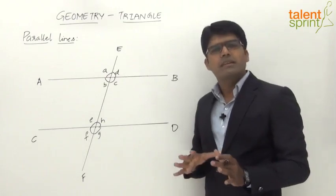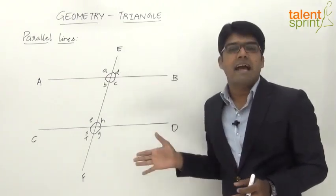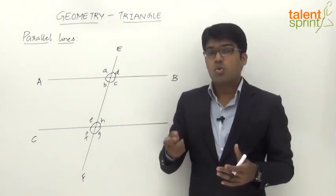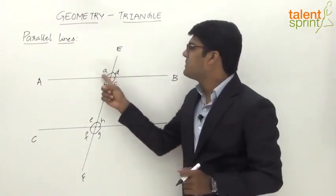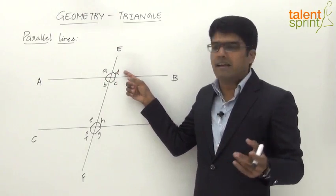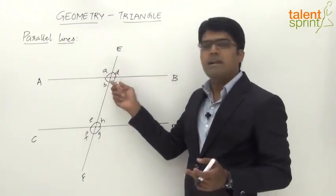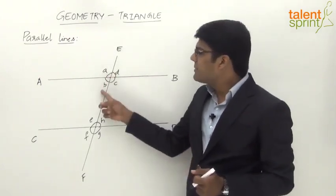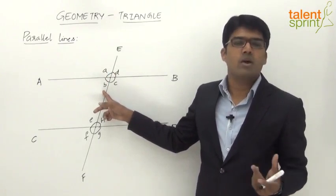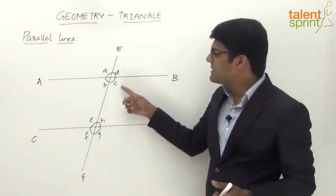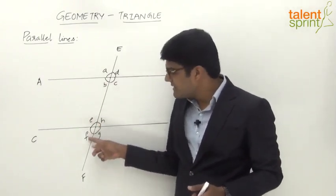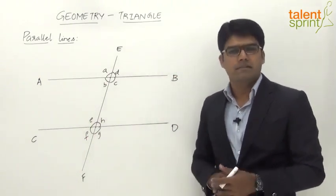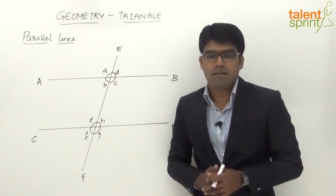The first and simplest property is that various pairs of angles form straight angles, each adding up to 180°. For example, A + D = 180°, A + B = 180°, D + C = 180°, B + C = 180°. Similarly at the second intersection: E + F, F + G, G + H, and E + H all add up to 180°.